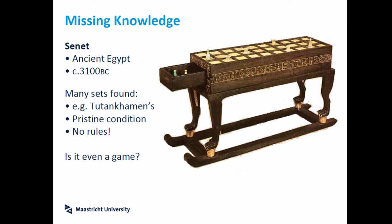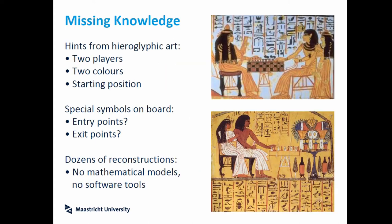For another example: Senet. Senet is the oldest game we find in all of history, from ancient Egypt, from 3100 BC. We find a lot of Senet boards in different terms and different places. One question is: is it a game, or something for religion or tradition? If you look at the hieroglyphic art, you see two players playing with two colors for the pieces and different starting positions. There are also different symbols on the board, but we are not sure if these are entry or exit points. For all such studies, we have dozens of reconstructions, and again, no mathematical models or software tools to prove if one of them is better or not.